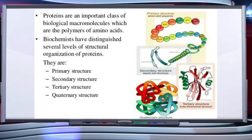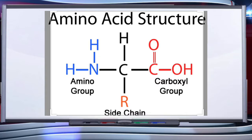Biochemists have distinguished several levels of structural organization of proteins: primary structure, secondary structure, tertiary structure, and quaternary structure. Amino acids are the monomers which form proteins. The chemical and physical properties of amino acids are essentially determined by the amino group, carboxylic group, and the R functional groups.